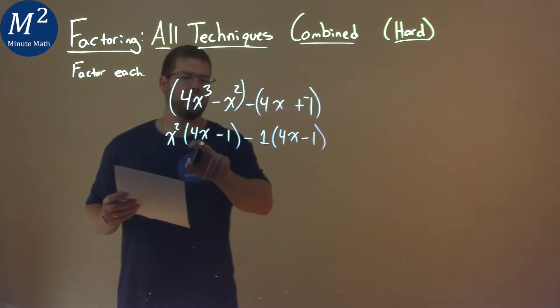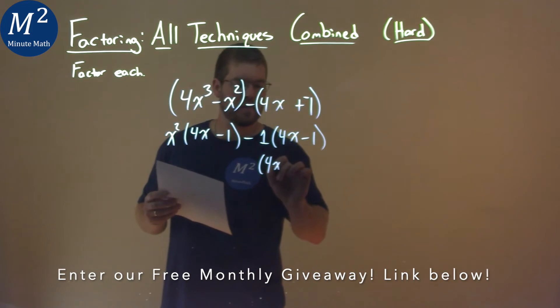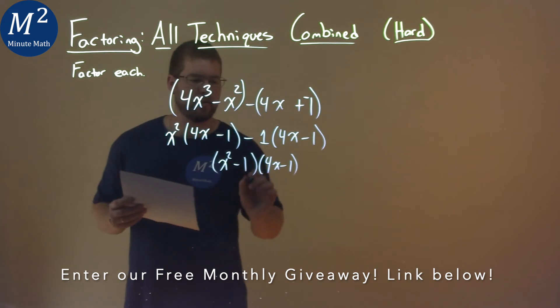Now, hopefully you can see that 4x minus 1 repeats. Bring that down, 4x minus 1, like this, and then we have an x squared minus 1 right there.